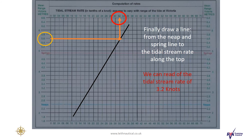And finally we draw a line from the neap and spring line to the tidal stream rate along the top. We can read off the tidal stream rate of 3.2 knots.